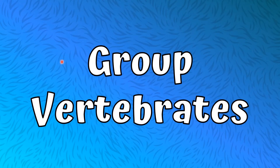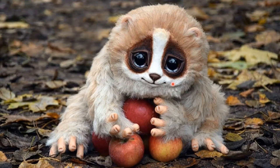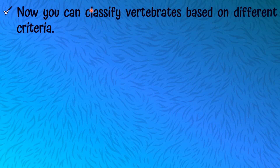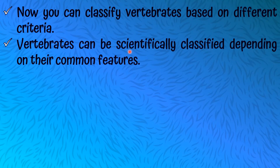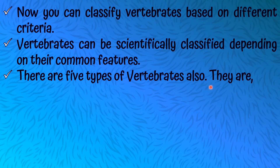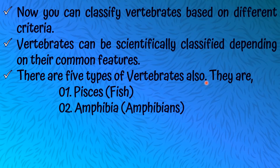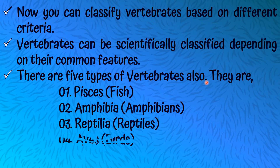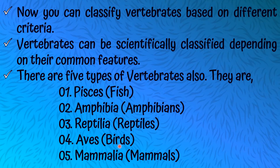Let's talk about the group Vertebrates. Vertebrates means animals having a vertebral column, or having a backbone. Vertebrates can be scientifically classified depending on their common features. There are five types of vertebrates: Pisces, Amphibia, Reptilia, Aves, and Mammalia. Their common names are Fish, Amphibians, Reptiles, Birds, and Mammals respectively.